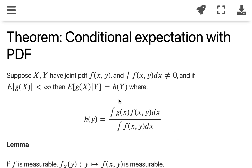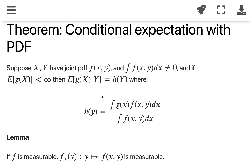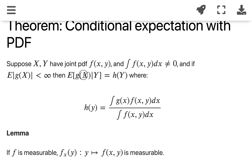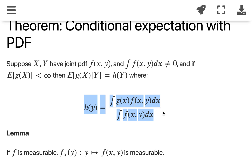What we have seen in our elementary probability is that given a joint PDF of random variables with PDF f, to calculate the conditional expectation of g(x) given y, the formula is the integral of g over the conditional PDF, which is f divided by the marginal PDF of y — the integral of f dx. That's what we need to prove: why we can calculate the conditional expectation using this formula.